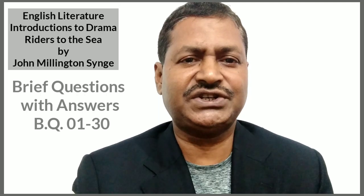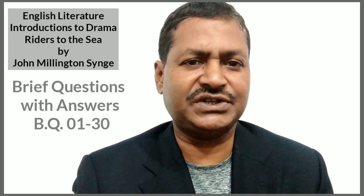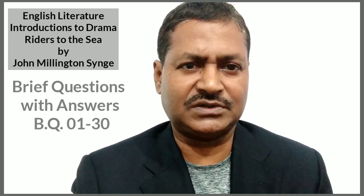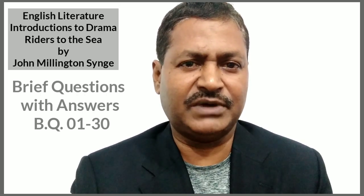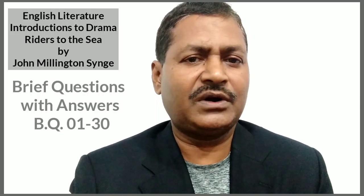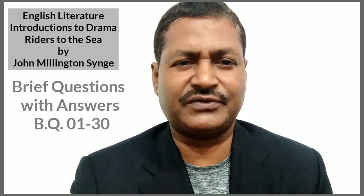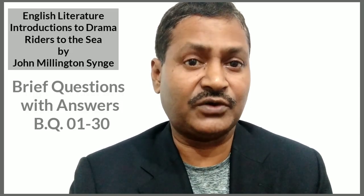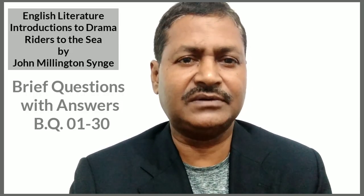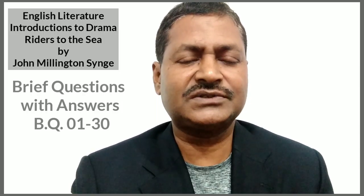Question 13: 'Where is she?' — Who said this and whom does 'she' refer to? Answer: Nora, the young daughter of Maurya, said this. She refers to her mother, Maurya. Nora brings the bundle of Michael's clothes from the village priest and wants to know from her elder sister Kathleen where their mother was.